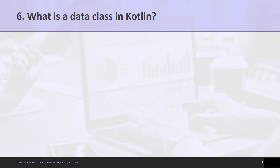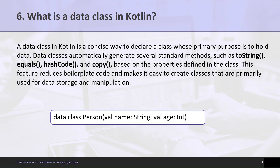Question 6: What is a data class in Kotlin? A data class in Kotlin is a concise way to declare a class whose primary purpose is to hold data. Data classes automatically generate several standard methods such as toString, equals, hashCode, and copy, based on the properties defined in the class. This feature reduces boilerplate code and makes it easy to create classes primarily used for data storage and manipulation.